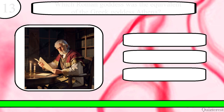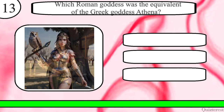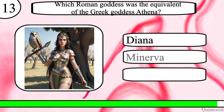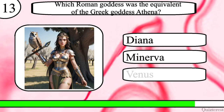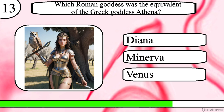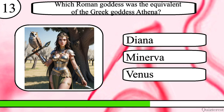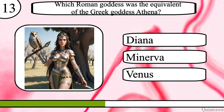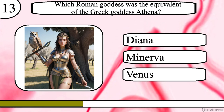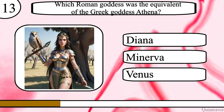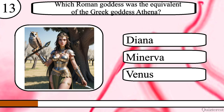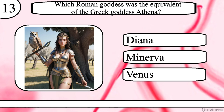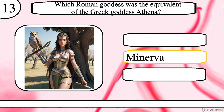Question 13. Which Roman goddess was the equivalent of the Greek goddess Athena? Diana, Minerva or Venus? The correct answer is Minerva.